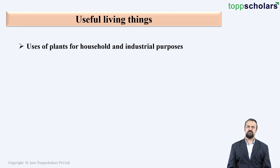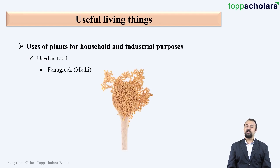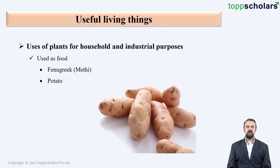As we know, plants can be used for household as well as industrial purposes. Plants can be used as food. For example, fenugreek, which is better known to us as mathi. Mathi is a common food item which is found in almost all households. Moving on, next we have potato, which is also used as food.